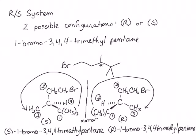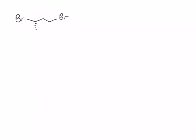Now let's identify a few more examples. What is the stereochemical designation and the IUPAC name for this compound? The chiral center is obvious because it has been drawn in perspective. The four groups attached to the chiral center are bromine, ethyl bromide, methyl, and hydrogen. The hydrogen is the lowest priority group, bromine is the highest priority, ethyl bromide is second, and methyl is third.